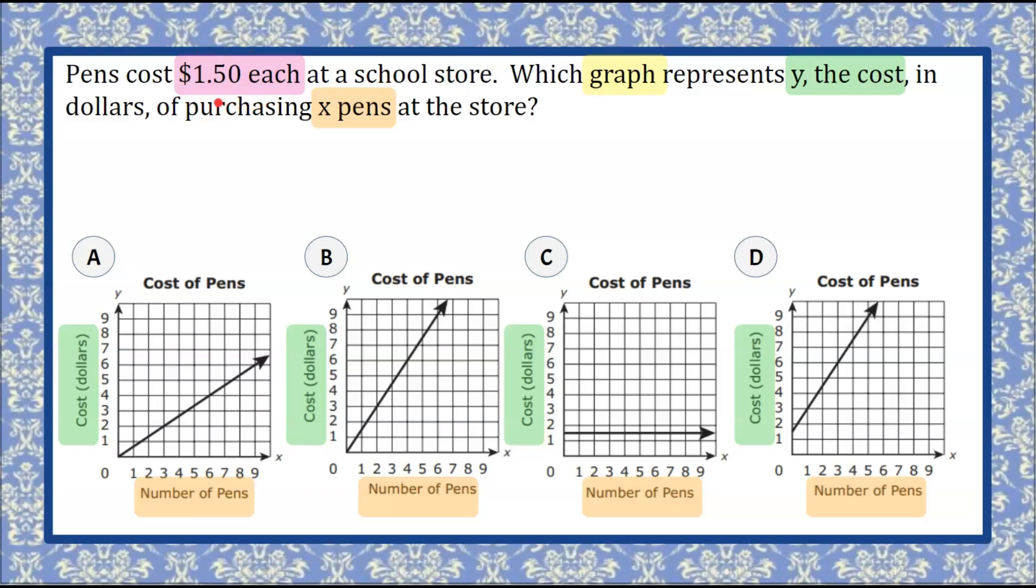Now let's also understand in this real-world situation that if we buy zero pens, we're going to pay $0. So (0, 0) needs to be a point on the line. Each one of these lines needs to begin at the origin, or it cannot be one of the lines that represents the situation.